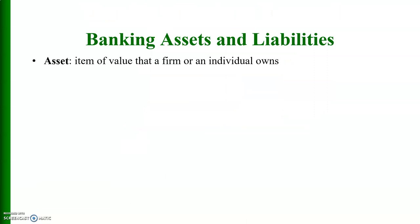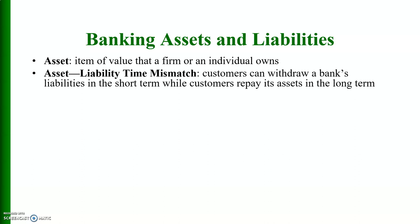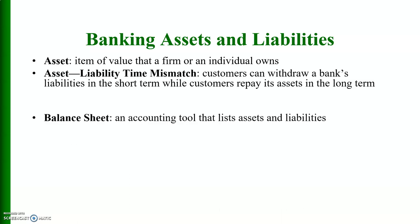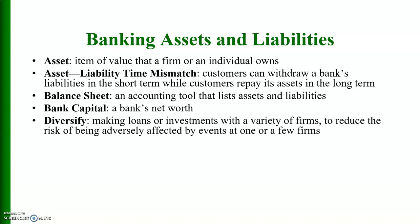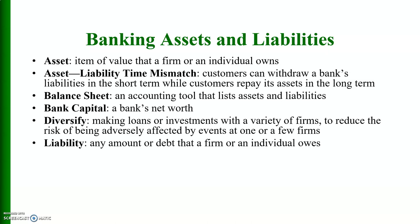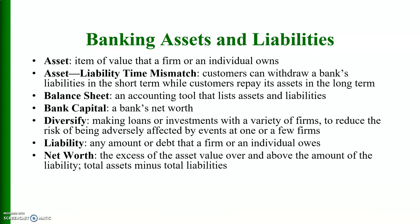An asset is an item of value that a firm or individual owns. A liability is any amount or debt that a firm or individual owes. Time mismatch means customers can withdraw a bank's liabilities in the short run while customers repay its assets in the long run. A balance sheet is an accounting tool that lists assets and liabilities. Bank capital is a bank's net worth. To diversify means to make loans or investments with a variety of firms to reduce risk. Net worth is the excess of asset value over liabilities — total assets minus total liabilities.